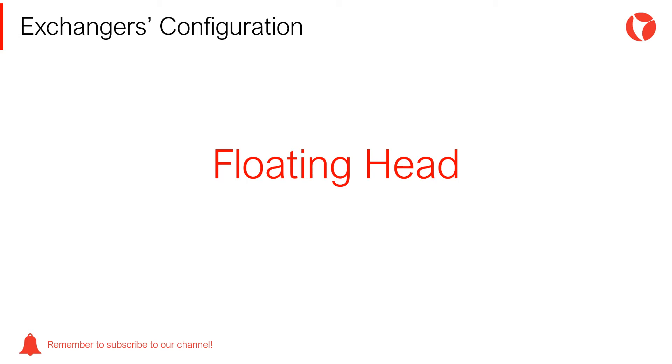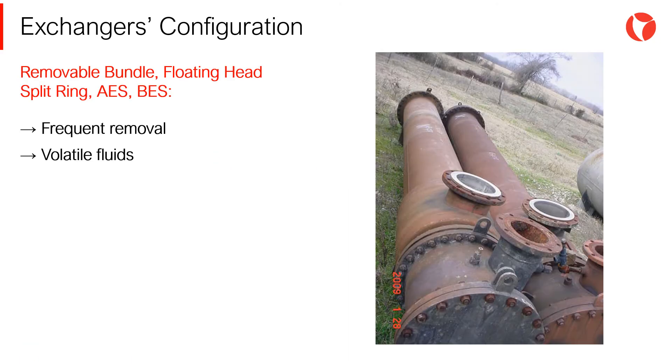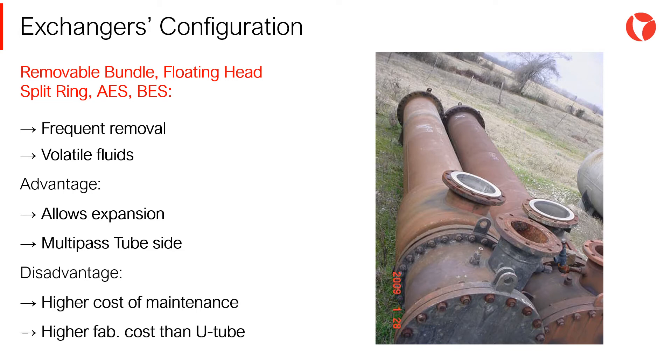And last but not least, the floating head heat exchangers. These types are a mixture of the two previous types. This configuration is the best option for inspection, maintenance and repair. The main advantages are that they allow thermal expansion and can allow multipass tube-side configurations, from 2 to maybe 12. On the disadvantage side, we find higher cost of maintenance and higher fabrication cost than the U-tube type.